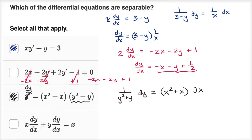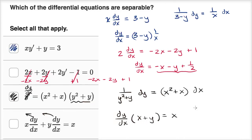Now this last choice is interesting — they've distributed the derivative. If we unfactor it, factoring out dy/dx gives dy/dx times x plus y equals x. Dividing both sides by x plus y gives dy/dx equals x over x plus y. It's not obvious how to write this as a function of x times a function of y, so this one is not separable. Only the first and third equations are separable.